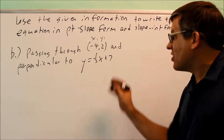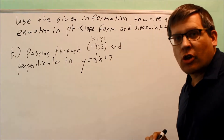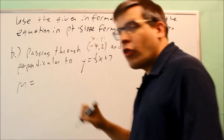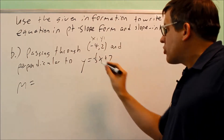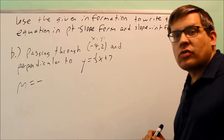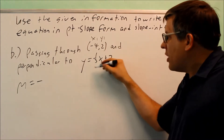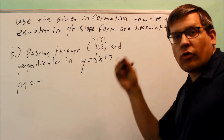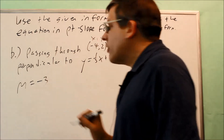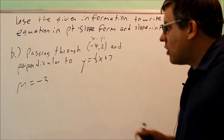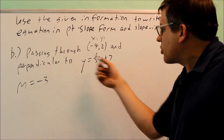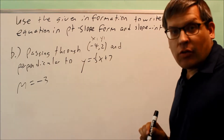To find the opposite reciprocal slope, the m I want to use must have the opposite sign — so it becomes negative — and I flip the fraction. One over 3 flipped gives me 3, so with the negative sign, the slope is negative 3. Therefore, a line perpendicular to the given one will have a slope of negative 3.